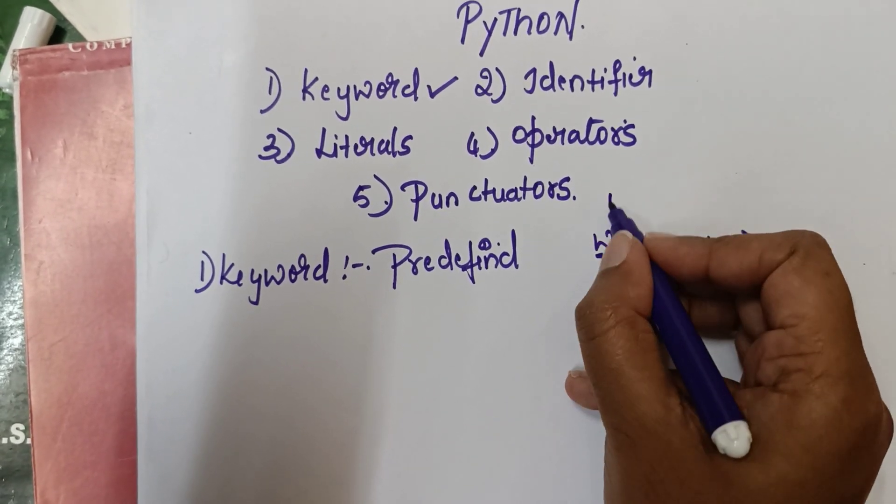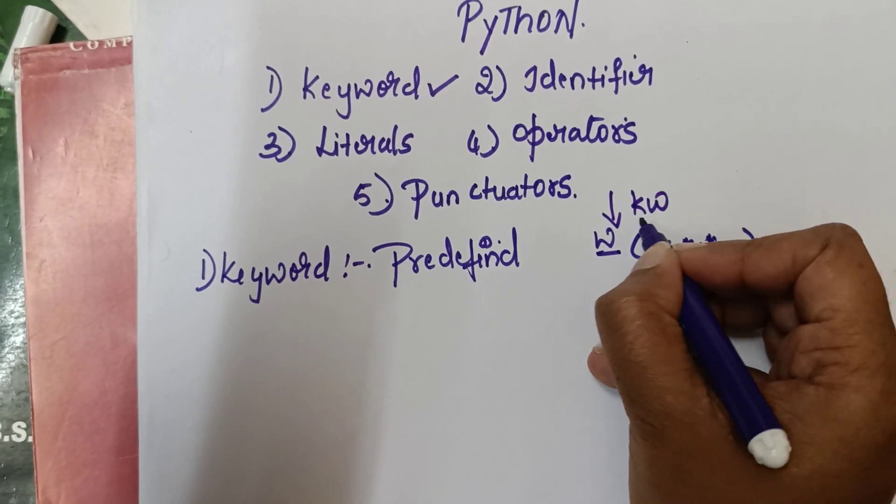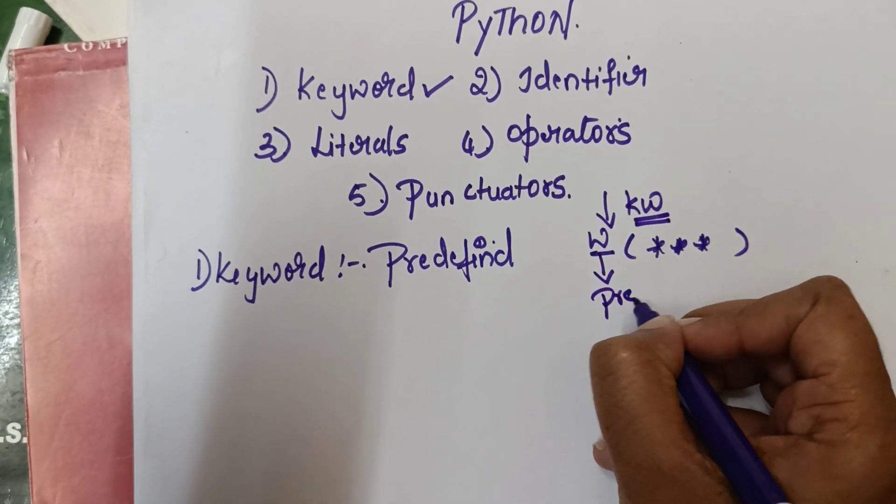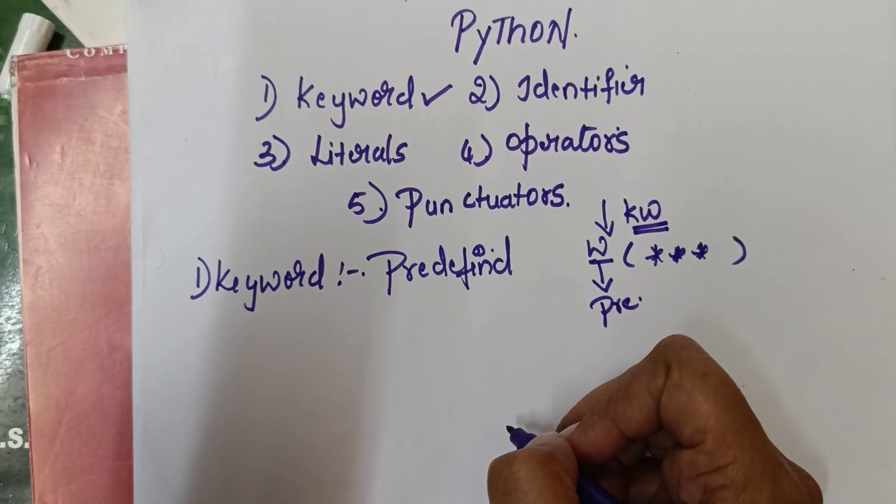The word is called a keyword. A keyword is predefined, it is a predefined word.